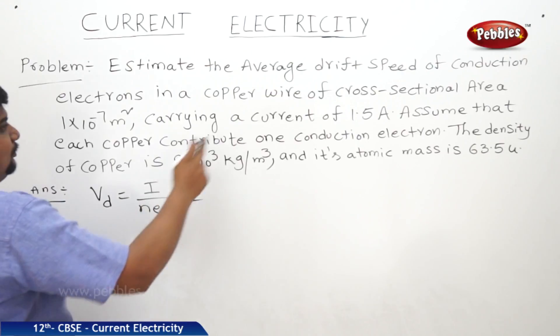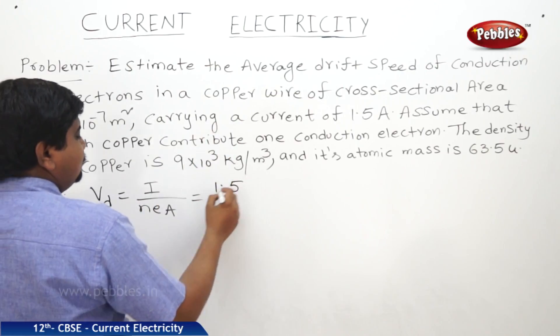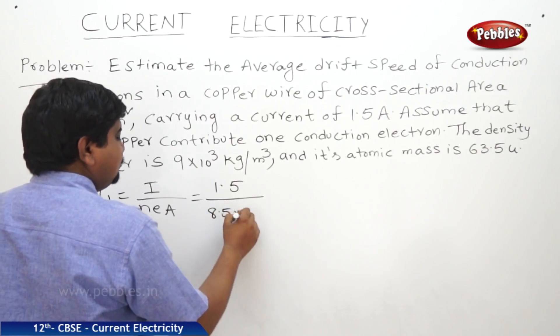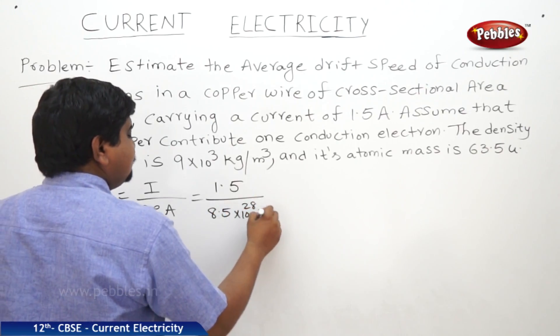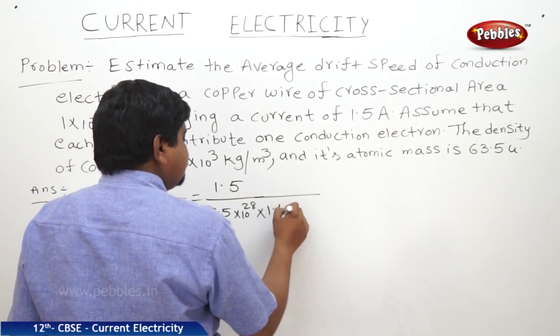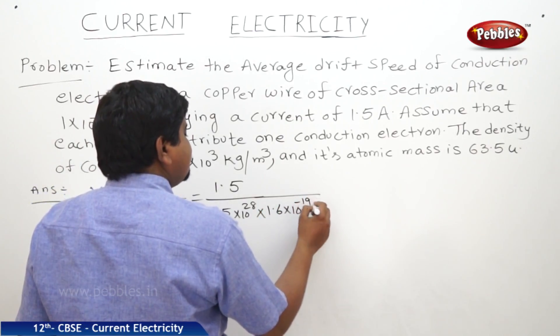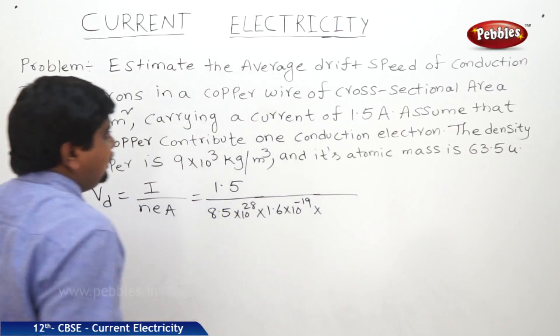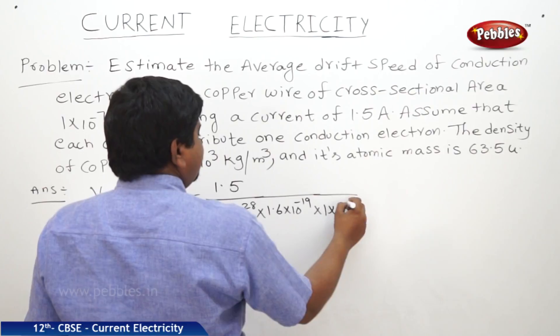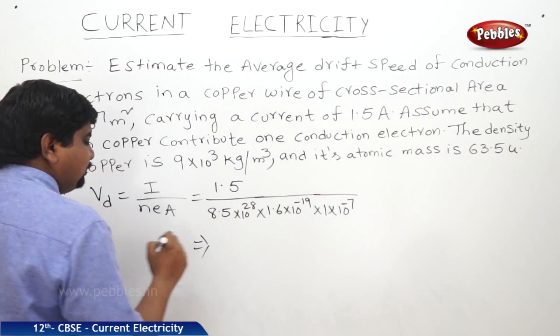Please see, what is I? 1.5. N, 8.5 into 10 to the power of 28. E, charge of each electron, 1.6 into 10 to the power of minus 19. A, what is the cross sectional area? 1 into 10 to the power of minus 7 meter square.